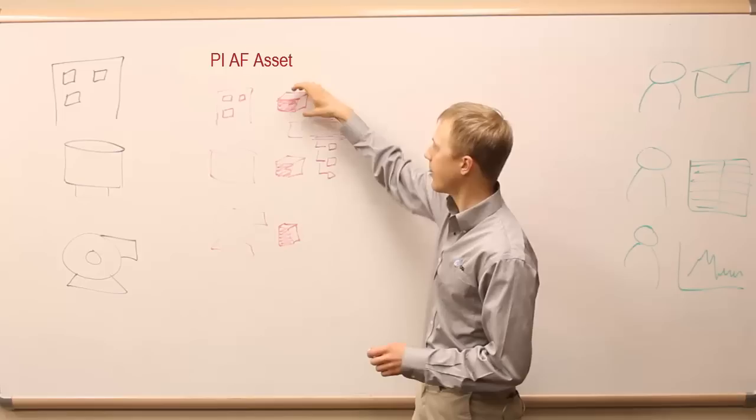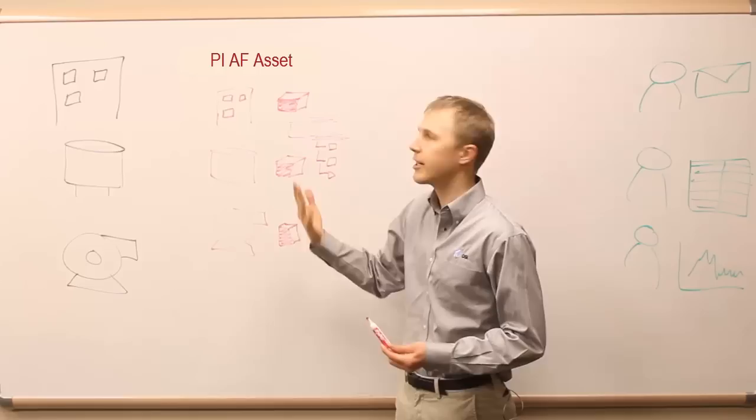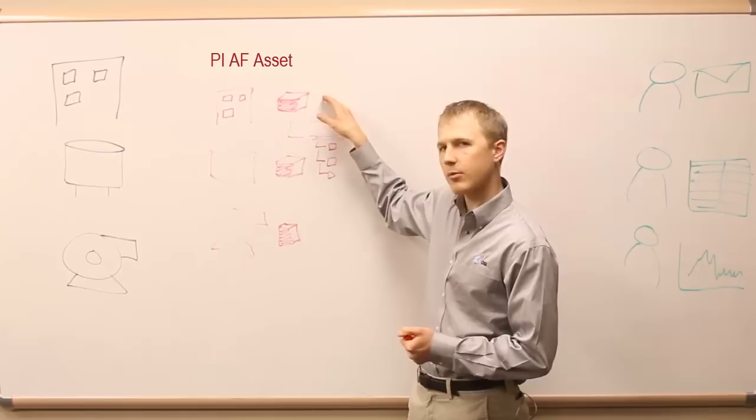PI AF Assets are a way of defining an item - a thing that's either a concrete thing, or maybe some organization like a maintenance organization. This is also sometimes called an element, so if you hear the word element, we're referring to the same thing as an asset.